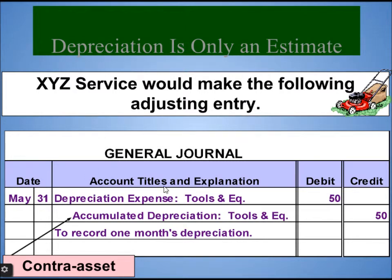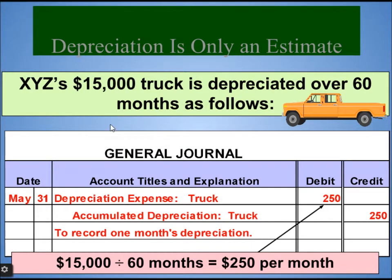XYZ would make the following adjusting entry: on May 31st, depreciation expense is $50 as calculated. The corresponding credit is accumulated depreciation — tools and equipment — of $50. This is a contra asset account, not a regular asset account. For the truck: XYZ's $15,000 truck is depreciated over 60 months. $15,000 divided by 60 months equals $250 per month. So depreciation expense is $250 on the debit side and accumulated depreciation of the truck is $250 on the credit side.